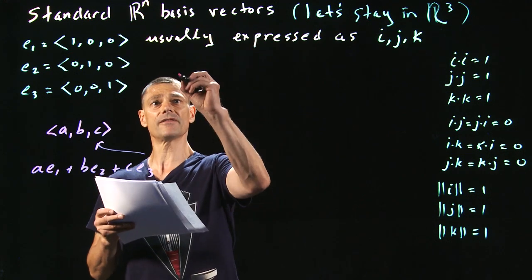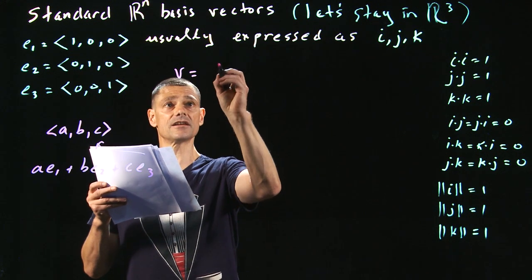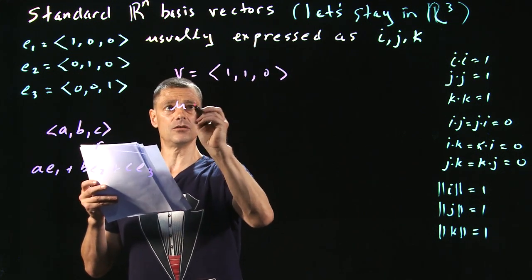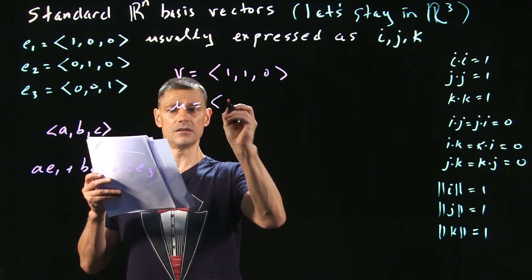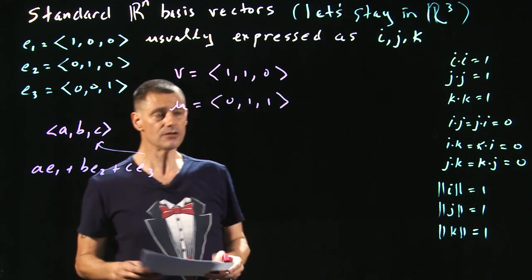And I have this fabulous example right here. Suppose we have these vectors. We'll let v, so v is going to be <1,1,0>, and u is going to be <0,1,1>.